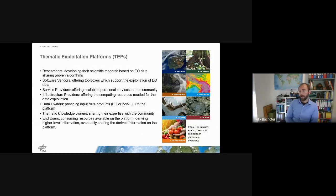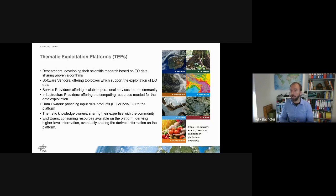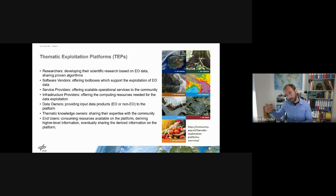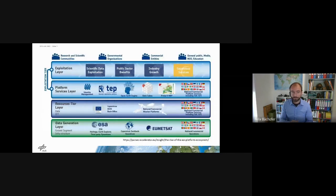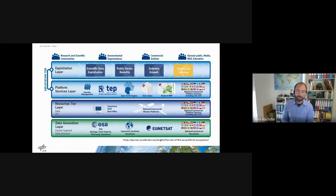There are several thematic exploitation platforms started by ESA: the Coastal TAP focusing on the coastal environment, the Forest TAP, the GeoHazards TAP — which was the first to be funded — the Hydrology TAP, the Polar TAP, the Food Security TAP, and the Urban TAP. All are still under development and operational. The GeoHazards TAP is fully operational. The Food Security TAP is quite far in the operational phase. The Urban TAP is now at the edge — by end of year we want to bring it into completely operational mode.